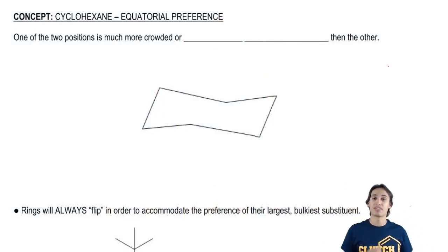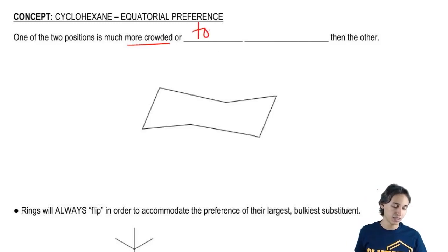The equatorial preference has to do with the fact that one of the two positions – remember that there's the axial position and there's the equatorial position – one of them is going to be much more crowded or what we call torsionally strained than the other.